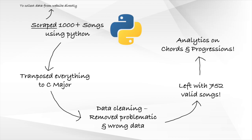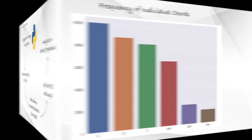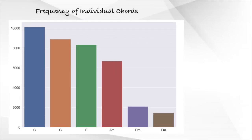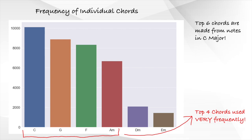Enough with the background talk — let's dive into what we managed to find out from analyzing this data. First off, here is a graph showing which chords appeared most frequently. As we can see, unsurprisingly, the top 6 chords that appear the most in the songs are the 6 chords made from the notes in the C major scale: C major, G major, F major, A minor, D minor, and E minor. Out of these 6 chords, C major, G major, F major, and A minor appear the most.